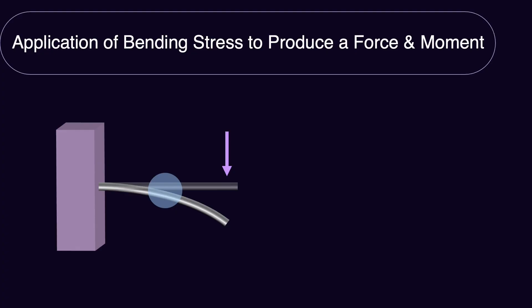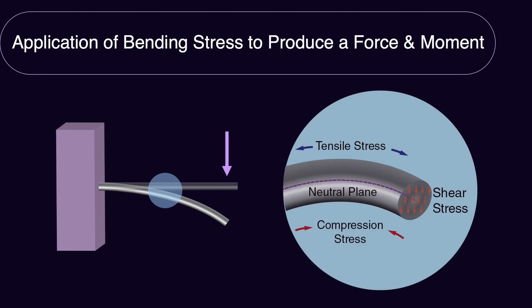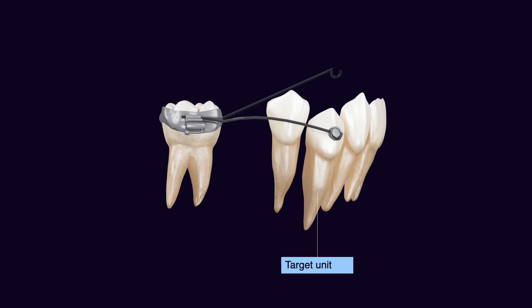Sometimes we apply a bending stress to the material. This is especially used with wires. By applying a bending force perpendicular to the long axis of the material, or parallel to the cross section of the wire, we produce a bending stress that is a combination of different types of stresses — it can produce compressive stress, tensile stress, and shear stress — as part of the catalog of forces and moments we can use for treatment.